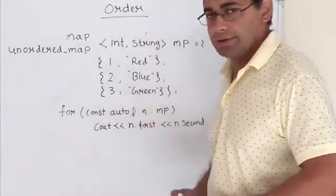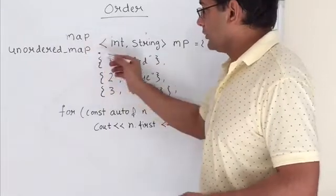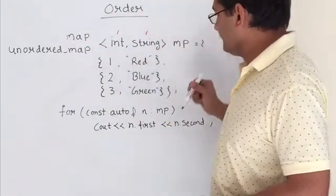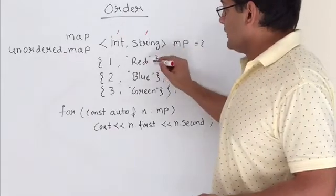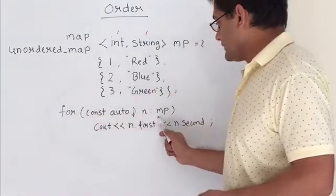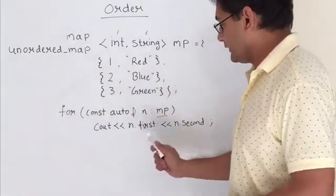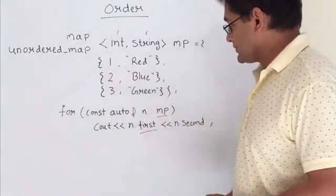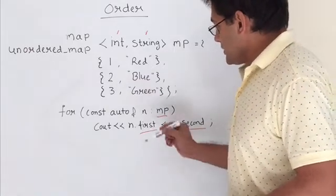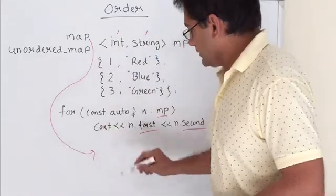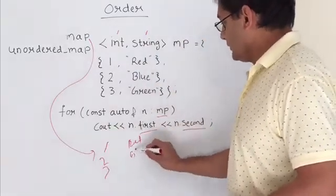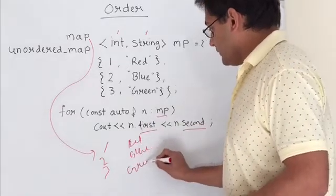Let's take an example to understand ordering. If we define a map or unordered map with an integer key and its mapped string value, and initialize as red associated with index 1, blue associated with index 2, and green associated with index 3. Now we iterate all the elements of the map one by one and try to print them. The first property is used to print the key, and the second property is used to print the associated value. In map, it will always be in sorted order — it will print 1, 2, 3 for keys, and red, blue, green for values.